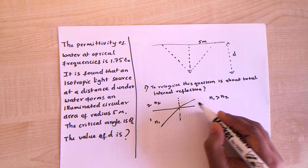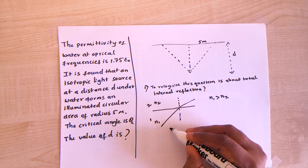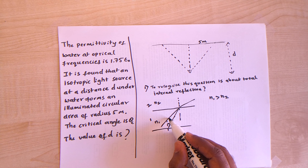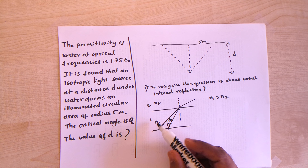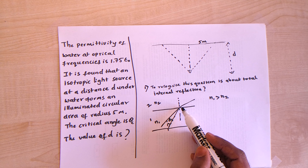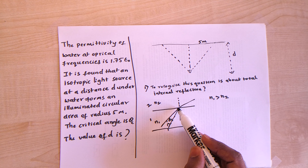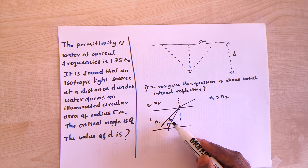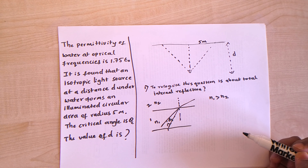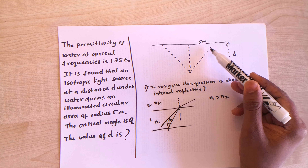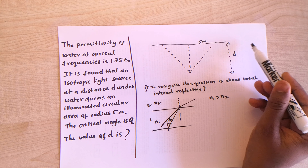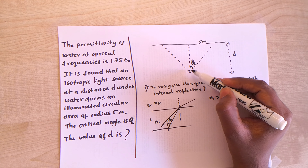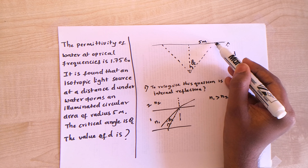At certain angles, the light traveling from the denser medium will graze the surface — that is called the critical angle. At the critical angle, light traveling from a denser medium to a rarer medium undergoes total internal reflection, exactly grazing the surface. In our problem, light from the source grazes the water surface at angle theta_c, and we need to find the depth d such that the radius on the surface is 5 meters.